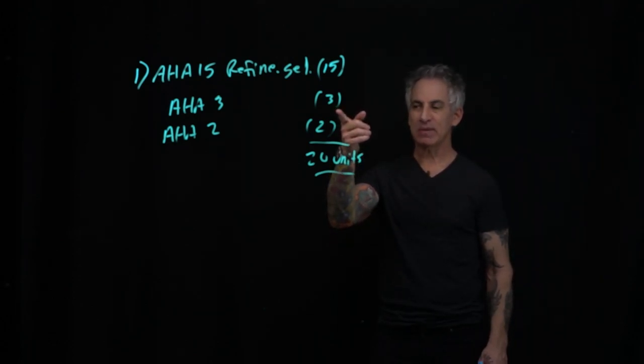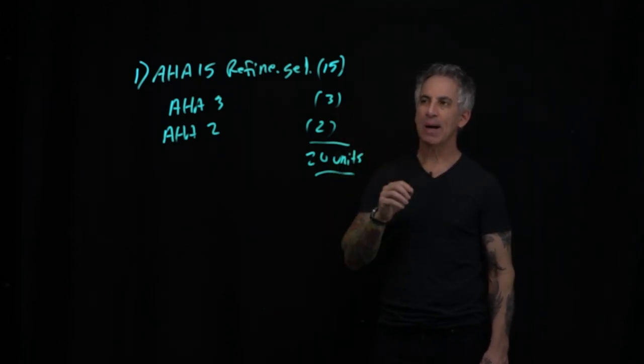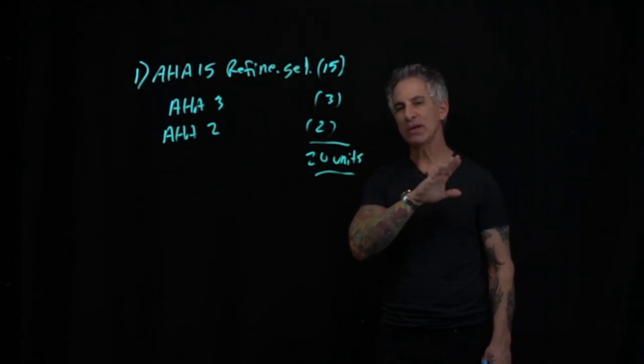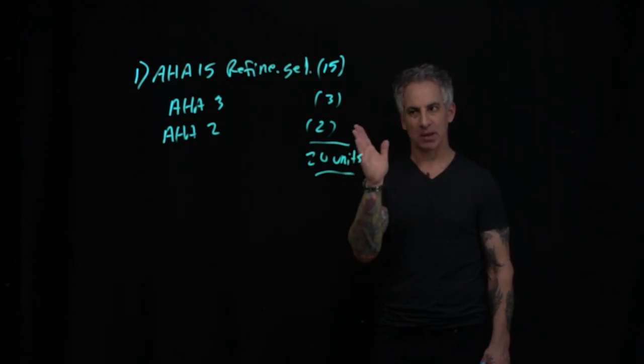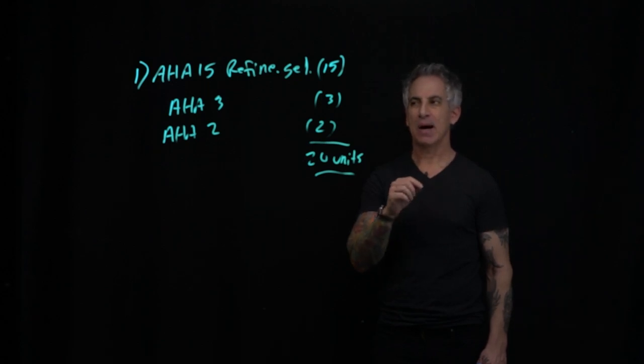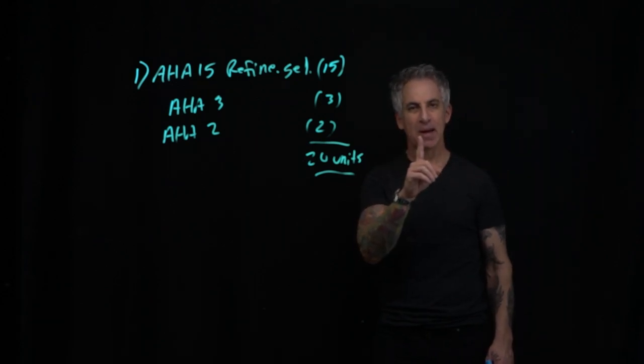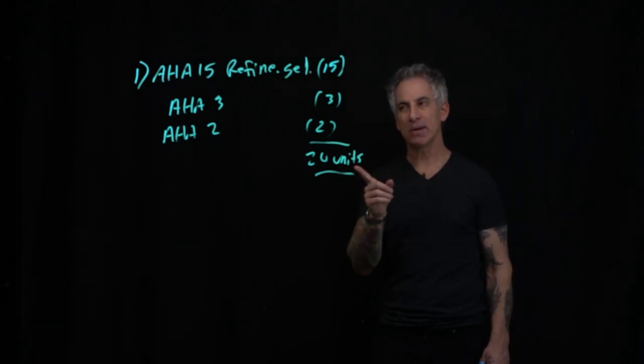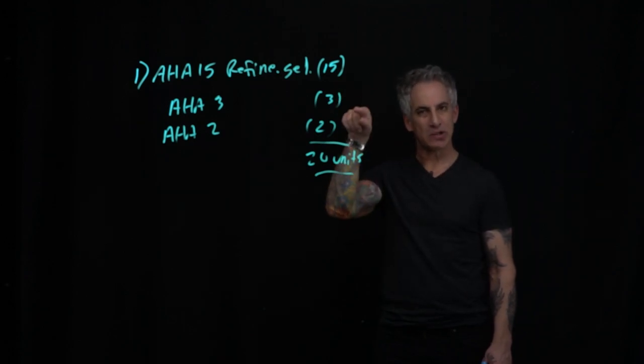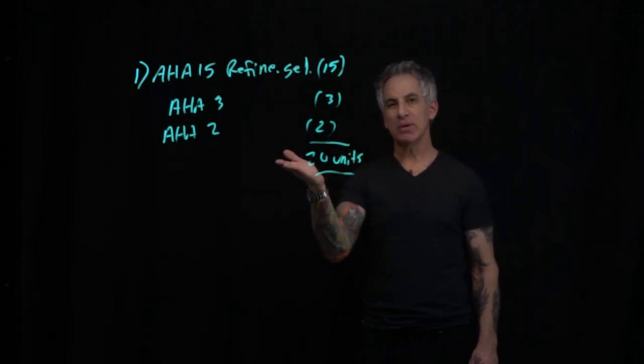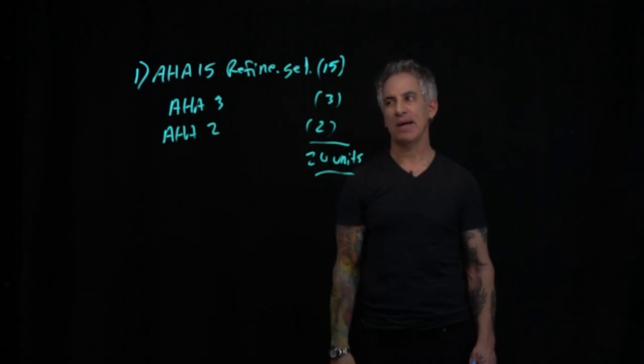With AHA-15 refining gel, I would go ahead and prescribe that no matter what the Fitzpatrick scale is on the small scale, one, two, or three, once a week. And if it was a Fitzpatrick one, which is a one and two on the large scale, I probably wouldn't even prescribe it, and I would prescribe AHA-3.